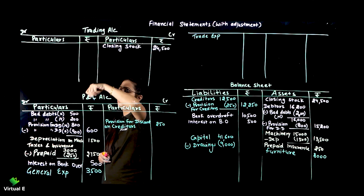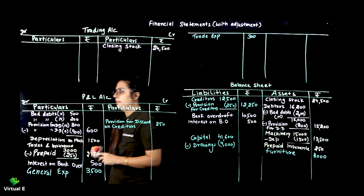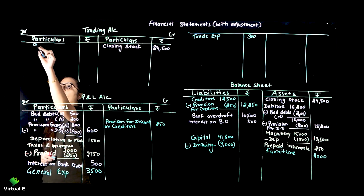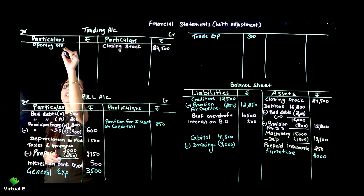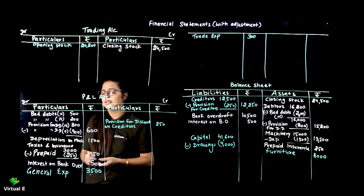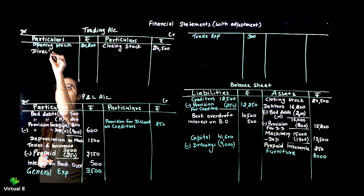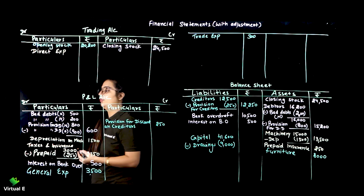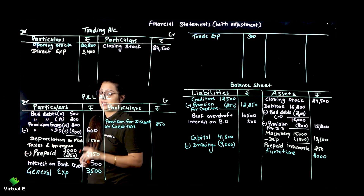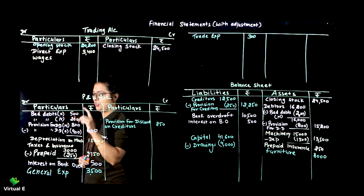Don't put trade expenses in trading just because the word 'trade' is written - that's a common mistake children make. After bad debts - already done. Bank overdraft already done. Then comes opening stock - because closing stock is already shown, so remaining stock is opening stock: 20,200. Direct expenses always go to trading because they are directly related to manufacturing - 3,400 entered. Taxes and insurance already done. Wages always go to trading - remember, wages always go to trading: 9,000.